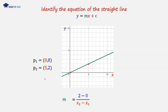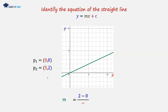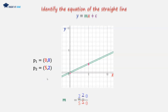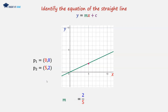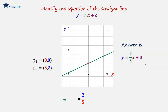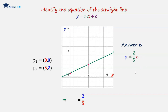Substituting these into the gradient equation, we're left with m is equal to 2 over 5. We substitute this into our equation, so the answer will be y is equal to 2 over 5 times x plus 0. Eliminating the 0, y is equal to 2 over 5x. And that is the answer.